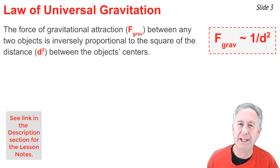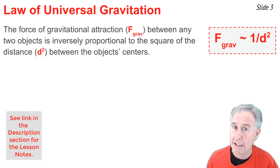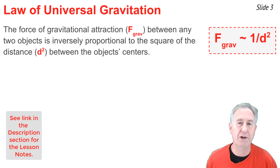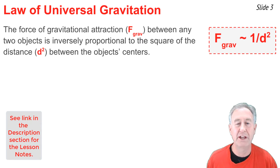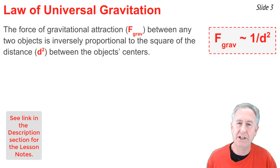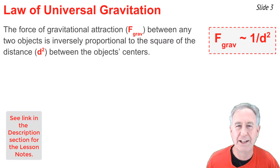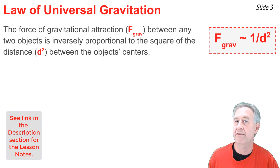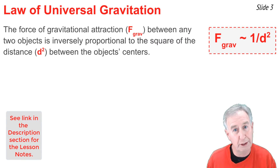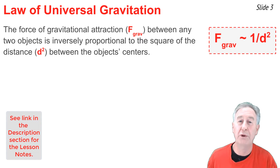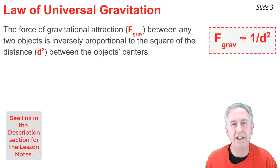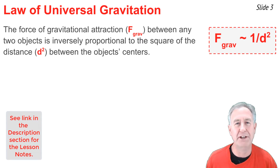Now, Newton is the F-net equals MA person, and he knows that gravity is the only force acting upon the Moon, so it's the net force. And since net force depends on mass, he reasoned that mass must somehow factor into the gravitational equation. And he reasoned, since he's the third-law person, that since there's not only a force of the Earth pulling on the Moon, but also of the Moon pulling on the Earth, this force of gravitation must also depend upon the mass of the Earth.